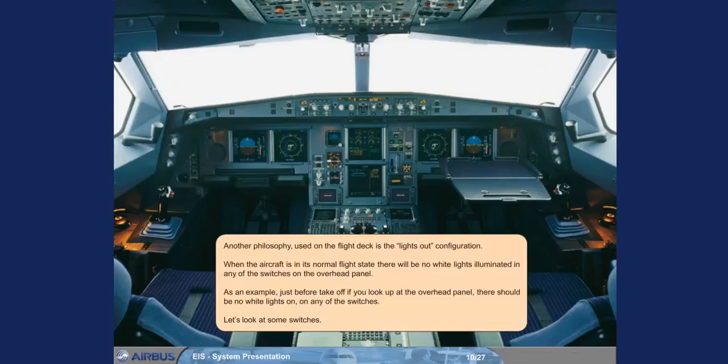Another philosophy used on the flight deck is the lights-out configuration. When the aircraft is in its normal flight state, there will be no white lights illuminated in any of the switches on the overhead panel. As an example, just before take-off, if you look up at the overhead panel, there should be no white lights on any of the switches.